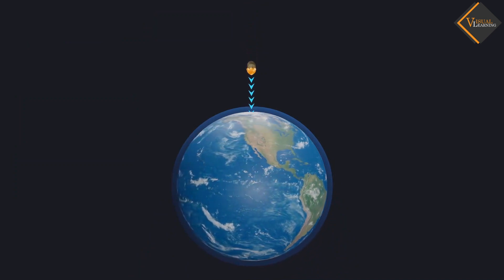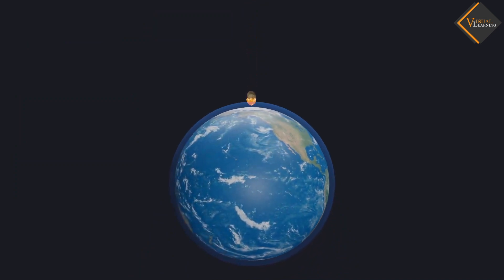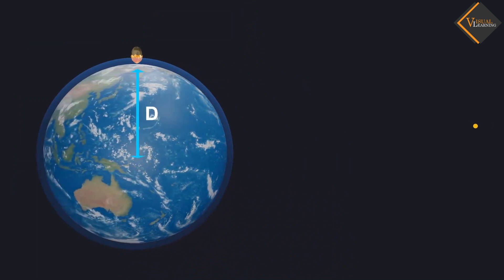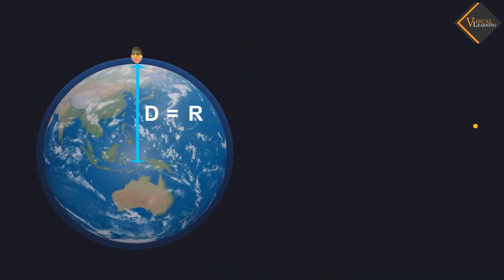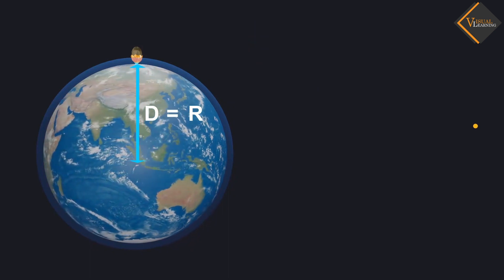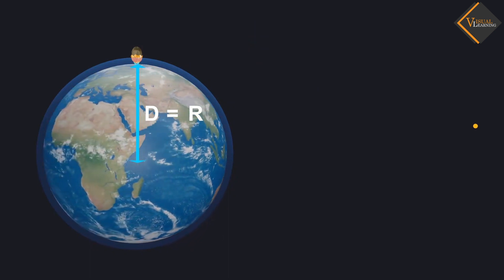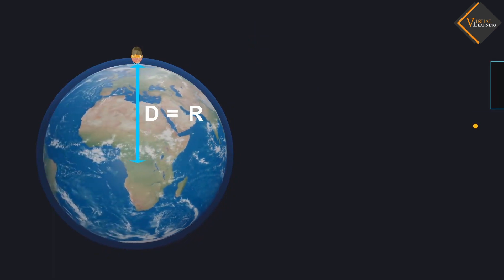Now, let the object be on the surface of the Earth or near the surface of the Earth. Then the distance D will be equal to R, the radius of the Earth. Thus, for objects on or near the surface of the Earth, the value of gravity will be GM over R squared.